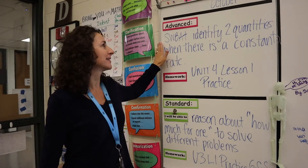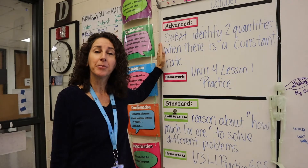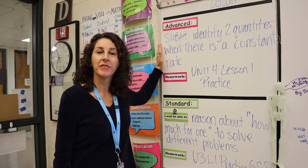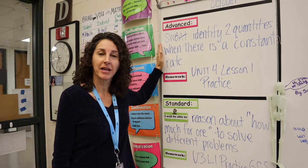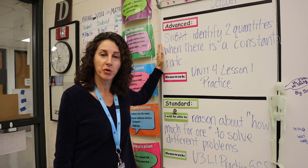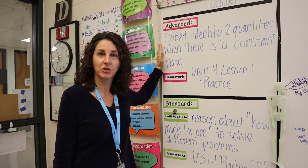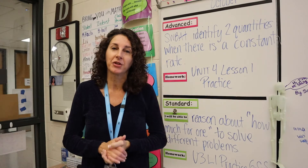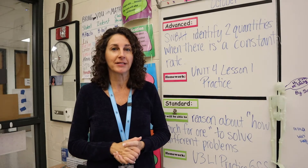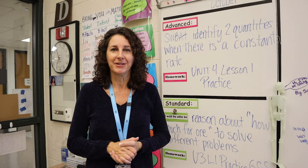The objective for today is that students will be able to identify two quantities when there is a constant rate. We are starting unit four, proportions and percentages, which is the seventh grade level, but I teach sixth grade advanced math in Illinois.